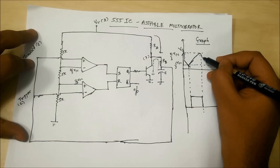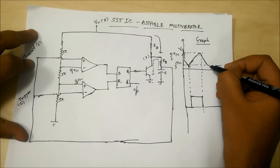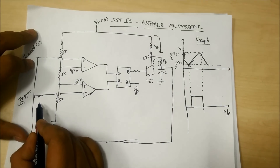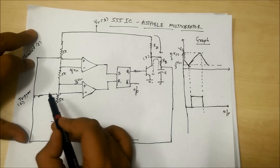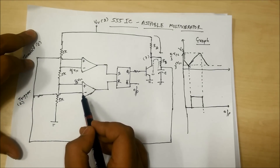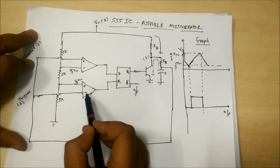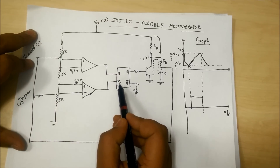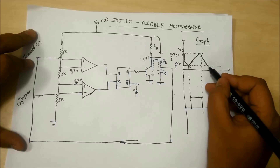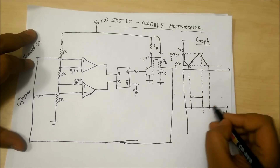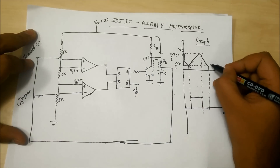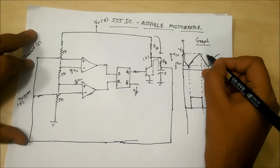As the capacitor discharges through RB and reaches less than 1/3 VCC, the trigger becomes active again. The voltage at the negative terminal of the lower comparator becomes less and positive becomes more, producing a high output — reset becomes high, set becomes low, so output goes high again. Q becomes low, the transistor turns off, and the capacitor starts charging again through RA and RB.